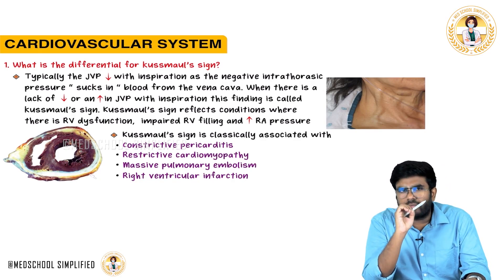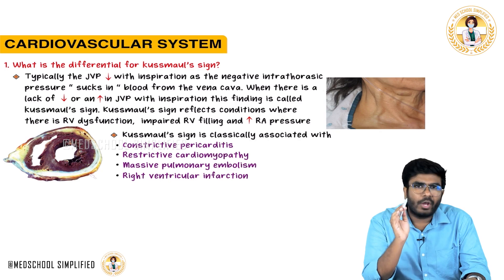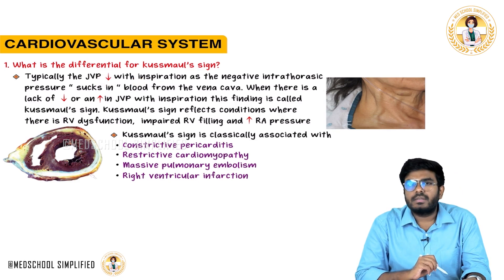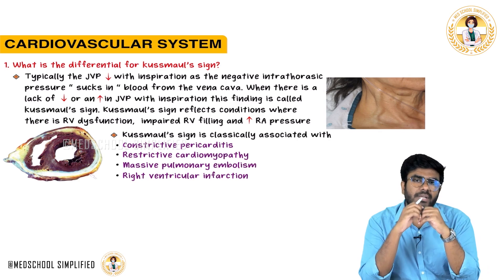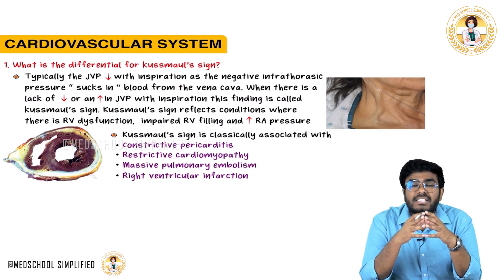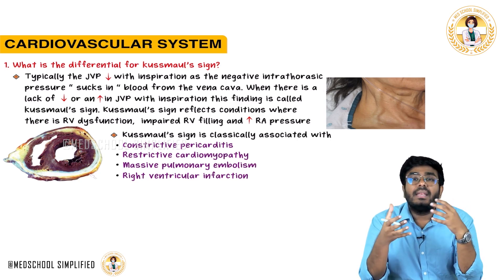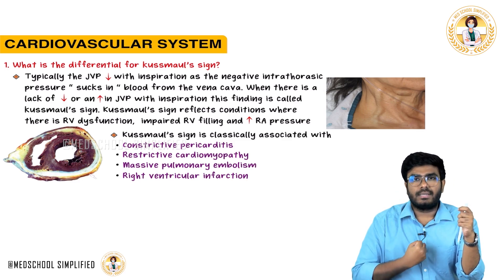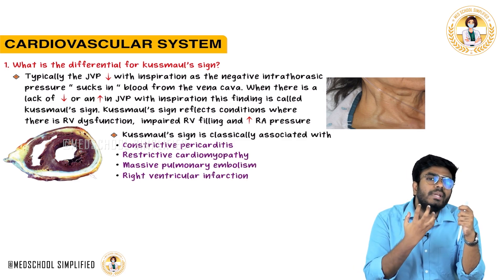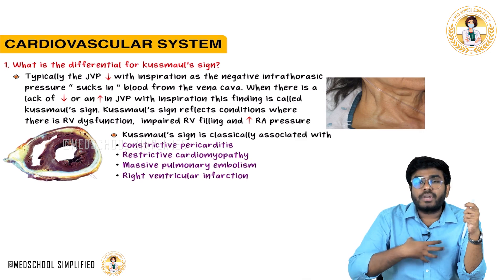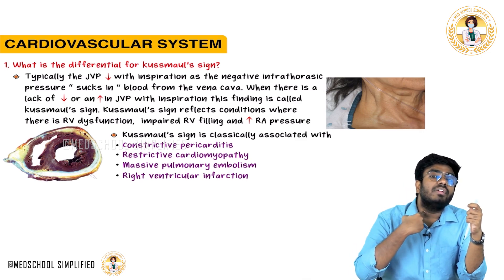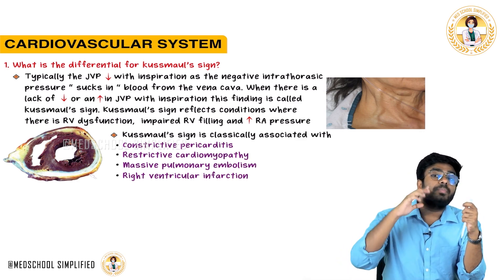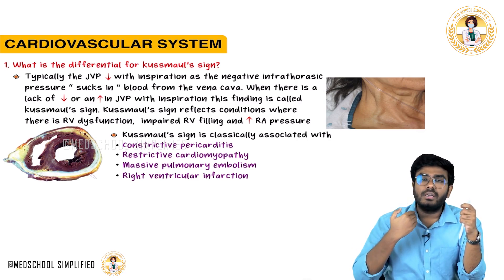Jugular venous pressure — we have already discussed the A wave, C wave, X wave, Y wave. What I am saying is jugular venous pressures are going to decrease with inspiration. Why? During inspiration, the thoracic cavity is going to expand. When the thoracic cavity is expanding, the negative pressure generated inside the thoracic cavity will suck the blood into the heart — from the internal jugular veins into the superior vena cava and from there into the right atrium. So, internal jugular venous pressure decreases.